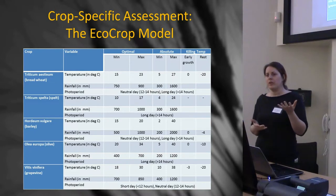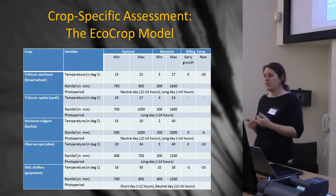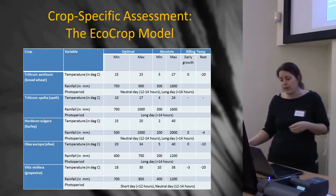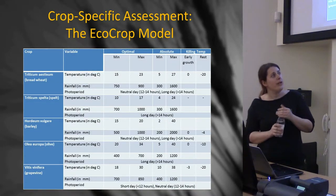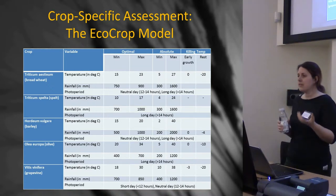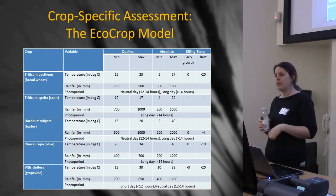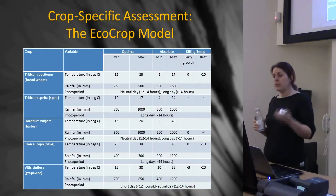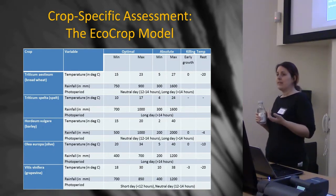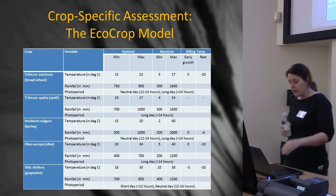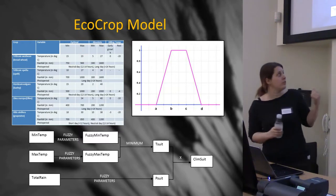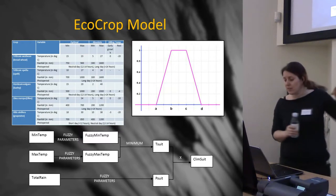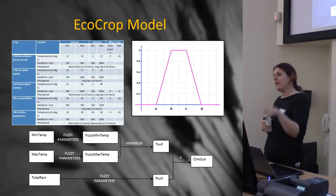Then I looked at the climatic limitations of different types of crops. I looked into one of the sub-models of GAEZ, the FAO's EcoCrop model. They've got a big database that takes lots of different types of crops and tells you the optimal growing temperatures, as well as the absolute growing temperatures and killing temperatures too. I took that and did a fuzzy classification using a standard trapezoidal membership function to create a temperature suitability, a rainfall suitability, and then combined those together.